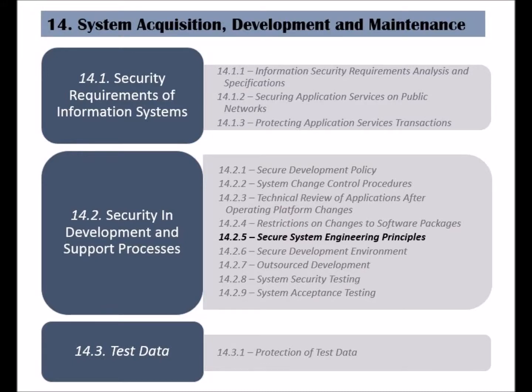The fifth control of the security in development and support processes is called secure system engineering principles. This control applies to in-house and outsourced information system engineering activities and ensures that information security needs are met.